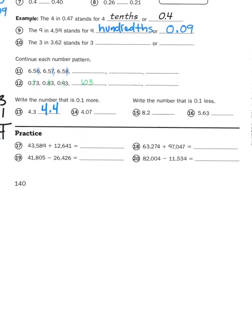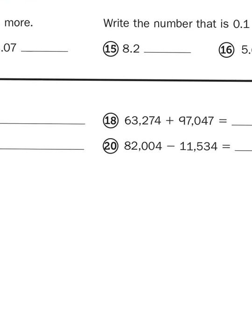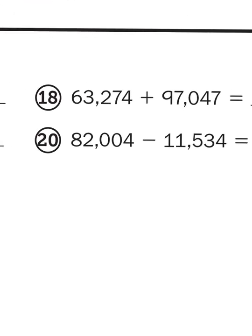Then finally, we've got some big number addition and subtraction problems. I figured we'd do at least one. Number twenty looks good: 82,004 minus 11,534. So I'm going to line these numbers up vertically. And as I do, you can see that there's going to be some regrouping involved, but not right away. Four minus four gives me zero, so I'm good there. I don't have to do any regrouping with that one.